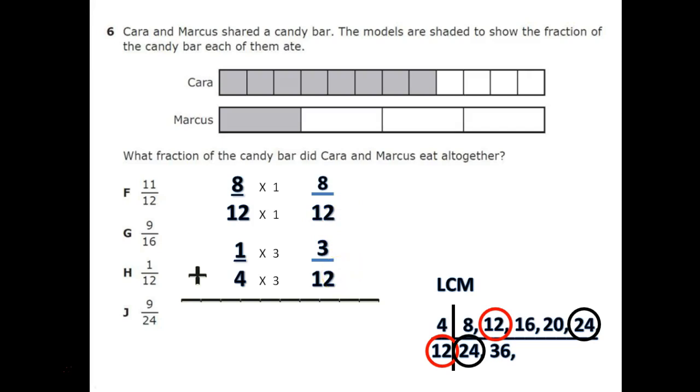So you add your numerators, 8 plus 3 would be 11. And then the denominator stays the same. And there's your answer, 11 out of 12, letter F.